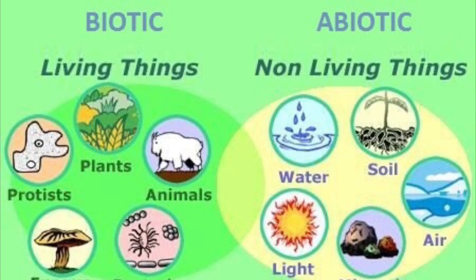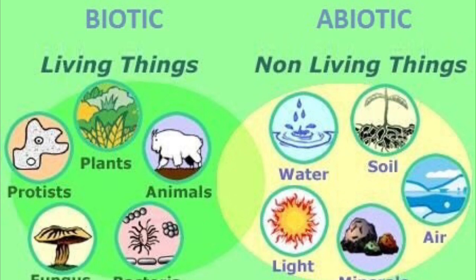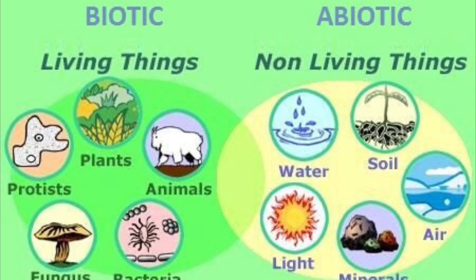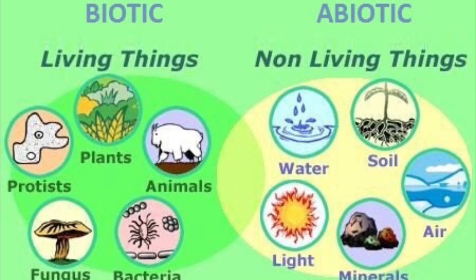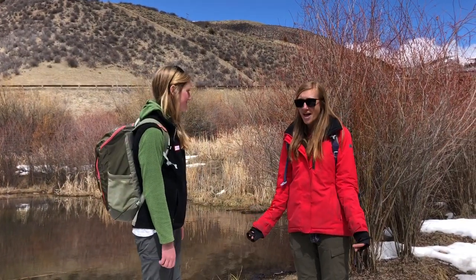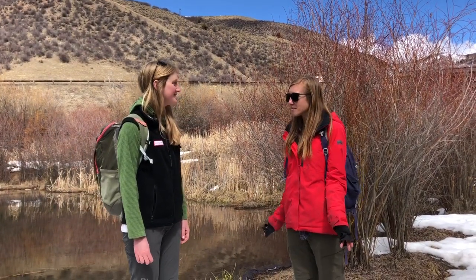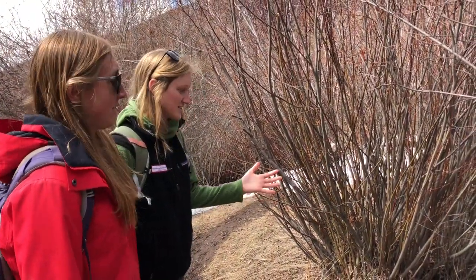If you think about biology as the study of life, biotic means a living thing — so plants and animals. Abiotic is the opposite of that, so anything that's non-living in an ecosystem, like rocks, dirt, or water. So the living things, the biotic things, would be like me and you and the plants and the animals. Are you ready to explore? Let's go!